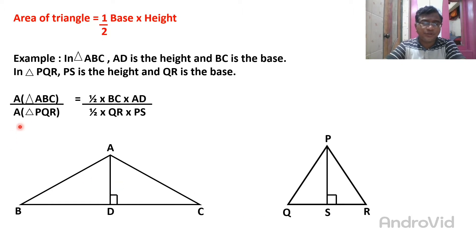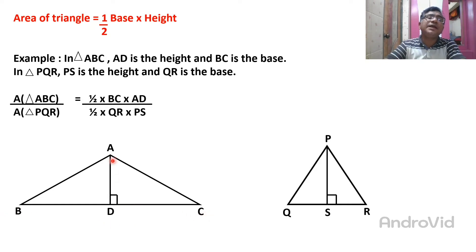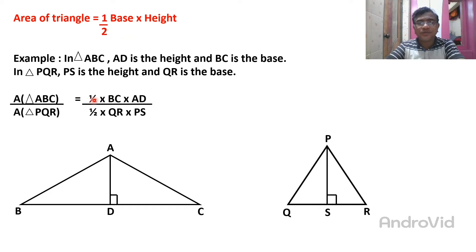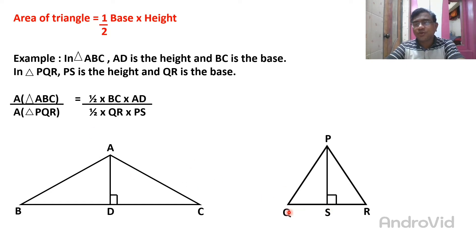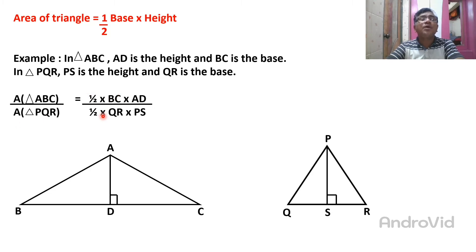Area depends on one-half base into height. Area of triangle ABC is equal to half base BC into height AD. Area of triangle PQR is equal to half base QR into height PS. So: area of triangle ABC = (1/2) × BC × AD, and area of triangle PQR = (1/2) × QR × PS.